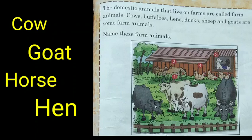Come on, repeat the name after me — cow, goat, hens, duck, sheep, and goats are the farm animals. These are the animals that we keep on the farm. A farm is a big place where we build shelters and houses, and we keep farm animals together. We take care of them, give them food and water. These animals are called farm animals.